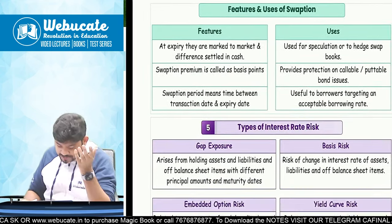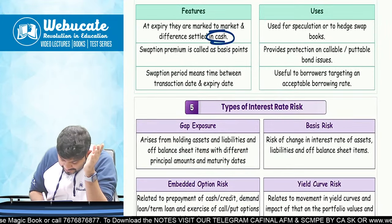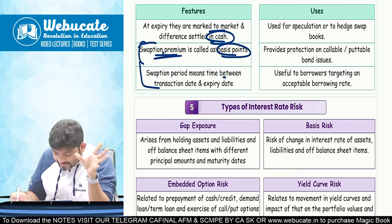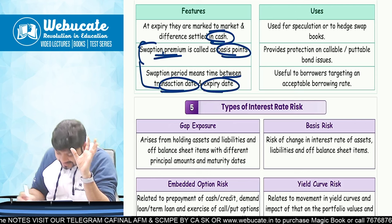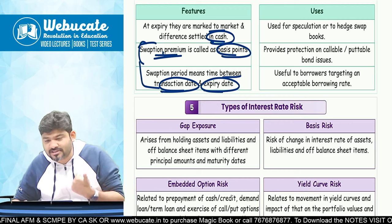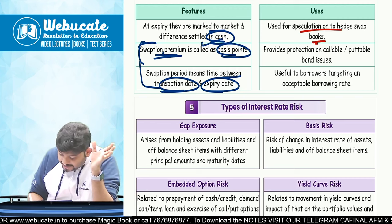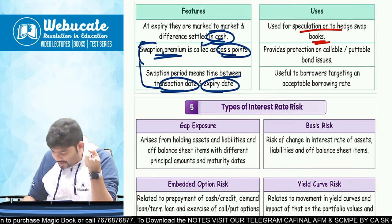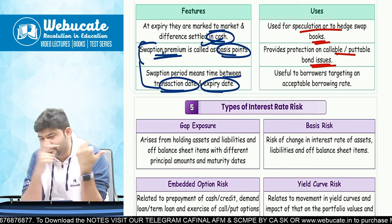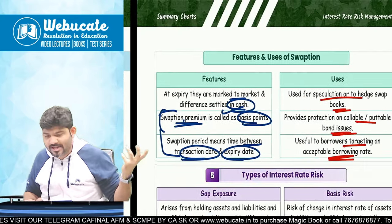Features and uses of swaption: at expiry, only the difference is settled in cash — you don't have to pay directly. Swaption premium is called basis points and can come in MCQ. Used for speculation or hedging — like any derivative instrument. Provides protection on callable bond issues since you can either receive floating and pay fixed or vice versa. Useful to borrowers targeting an acceptable borrowing rate — if you have a target rate in mind, you can create your swaption accordingly.